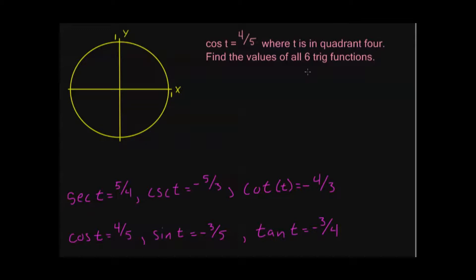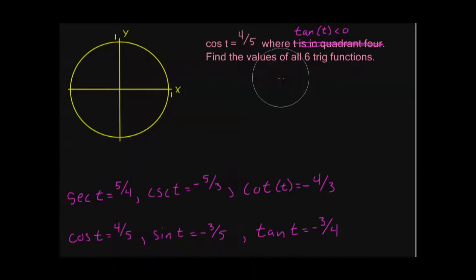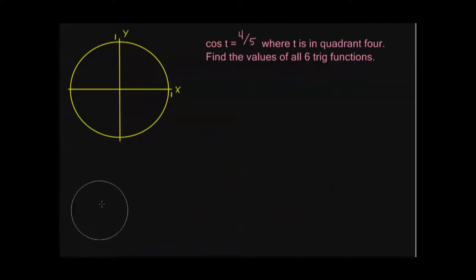Before we go to the second example, sometimes these problems can be a little more cryptic. Instead of telling me t is in quadrant 4, the problem might say tangent of t is less than 0. This is actually the same information. Cosine is positive only in quadrants 1 and 4, and tangent is negative in quadrants 2 and 4 — so the overlap is quadrant 4. Being in quadrant 4 is the same as being told tangent is negative. What you're really looking for is which quadrant you're in.